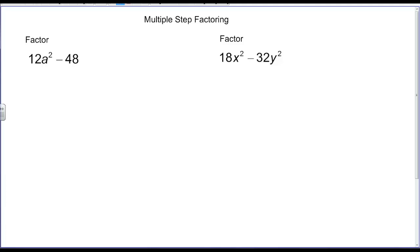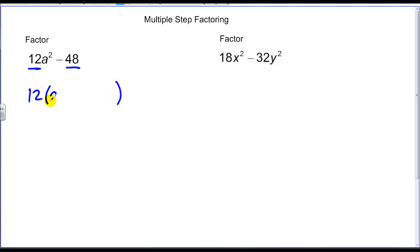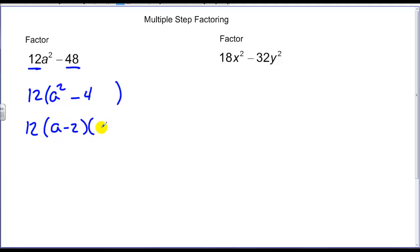Typically, we want to look to see if we have a difference of squares. We notice 12 is not a perfect square and neither is 48, but there are only two terms and there's a difference. What I notice with 12 and 48 is a common factor. So I do GCF factoring — there's a 12 in common — leaving me with a squared minus 4. And in that binomial, there are two perfect squares. So I've got 12 times a minus 2 multiplied by a plus 2.